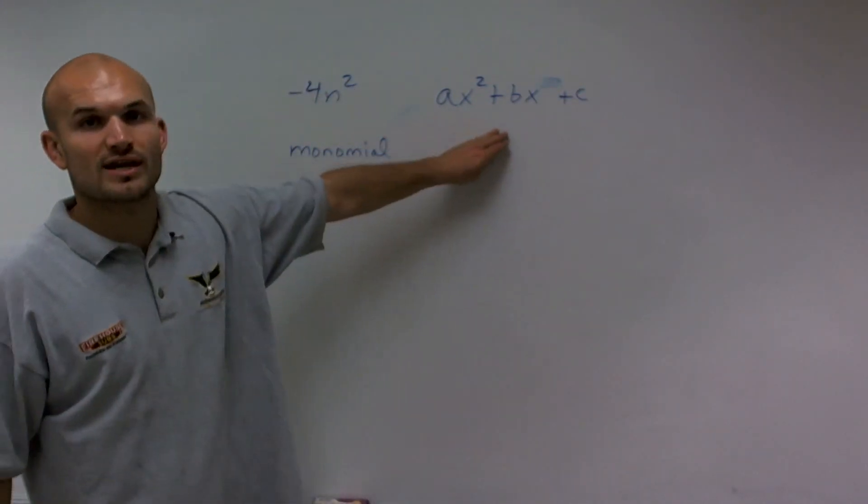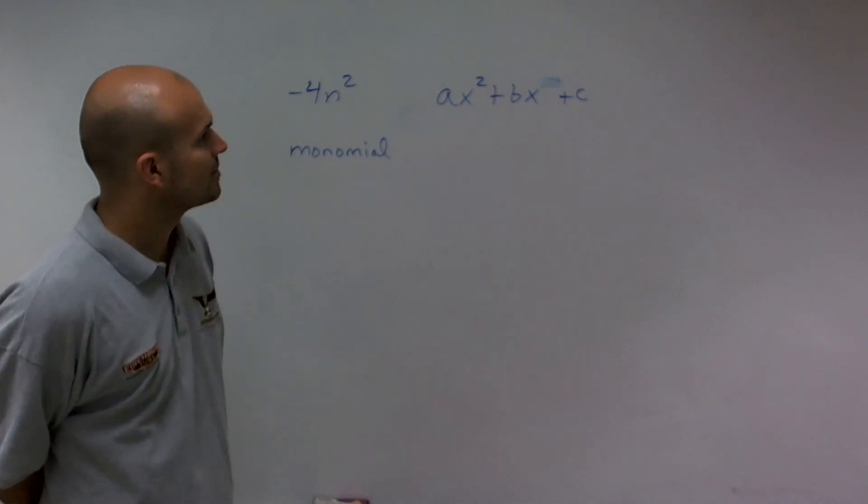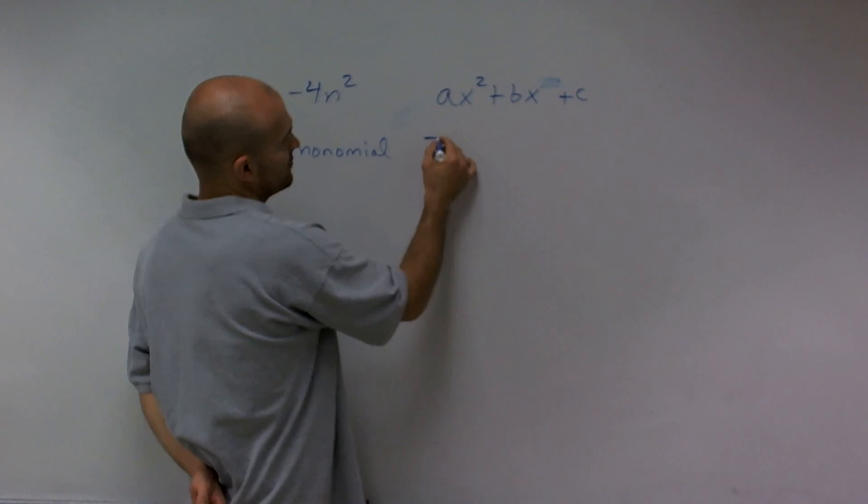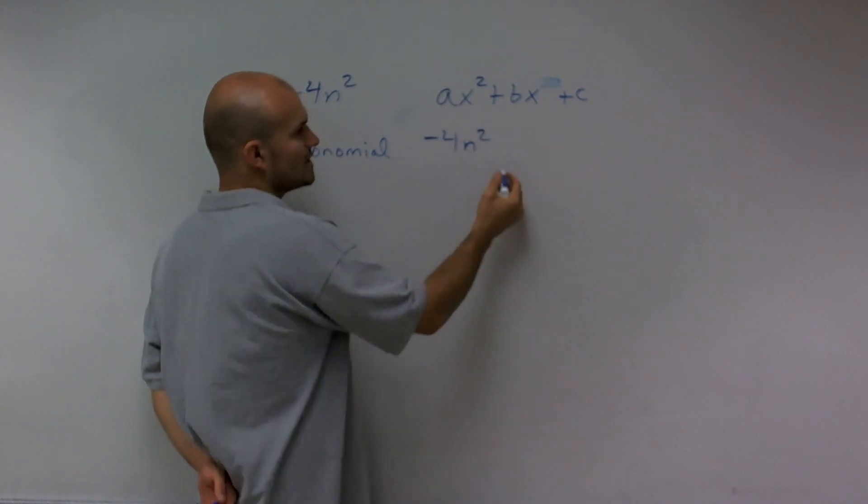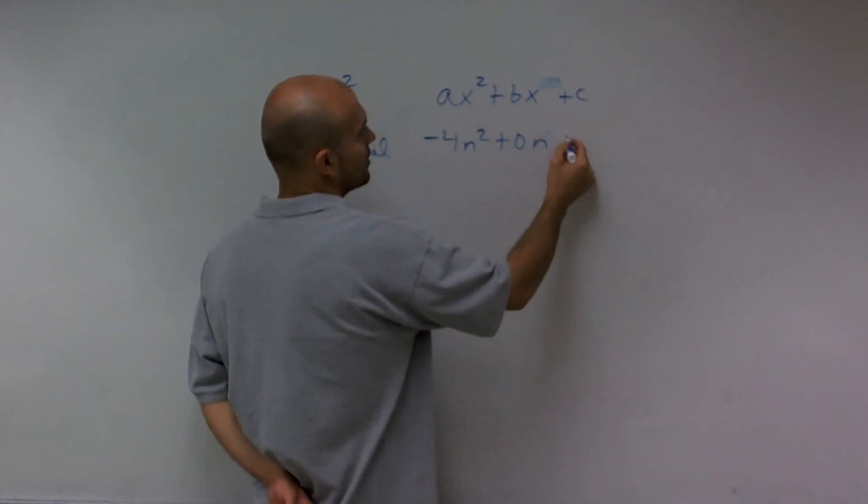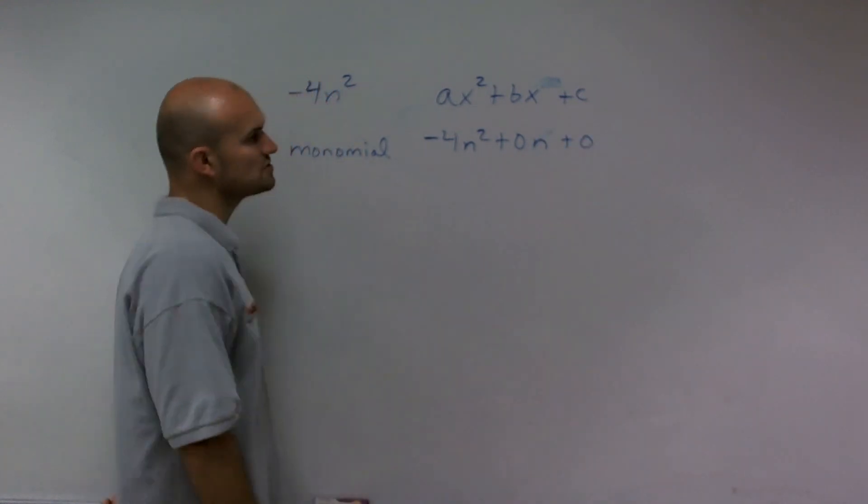And when we look at this, the quadratic form is ax squared plus bx plus c. Well, I can write this in quadratic form if I said my b was equal to 0 and c was also equal to 0.